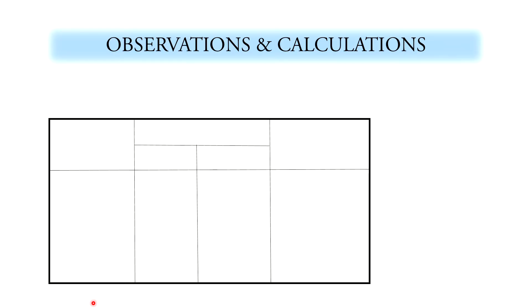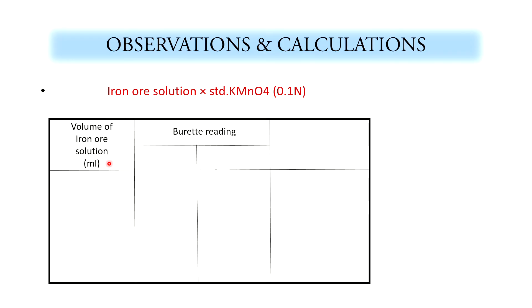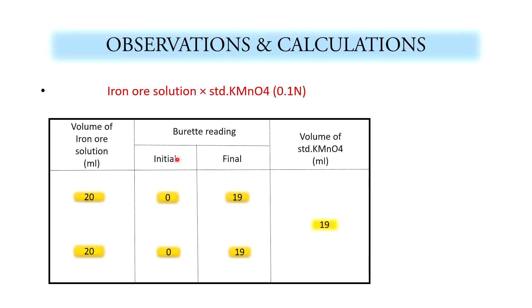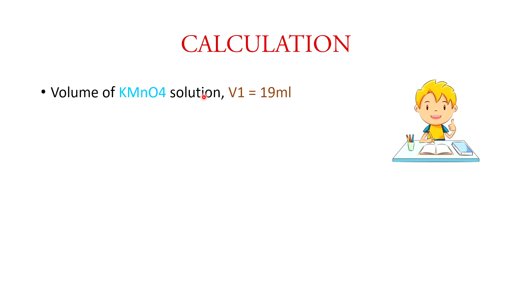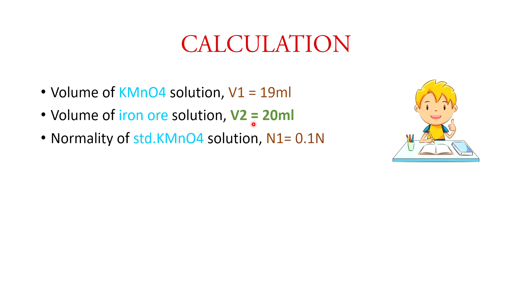Now we go to the observation and calculation. We record the burette readings: initial and final. For example, the initial burette reading is 0 and the final burette reading is 19 ml. So the volume of standard KMnO₄ solution used, V1, is 19 ml. The volume of iron ore solution, V2, is 20 ml. The normality of standard KMnO₄, N1, is 0.1 Normal.